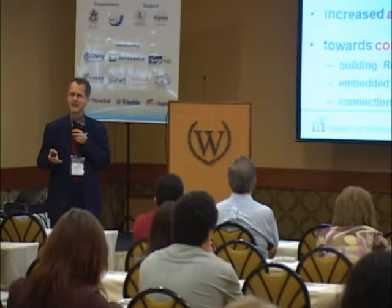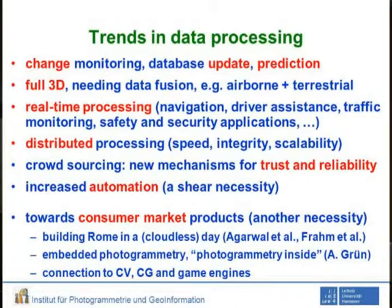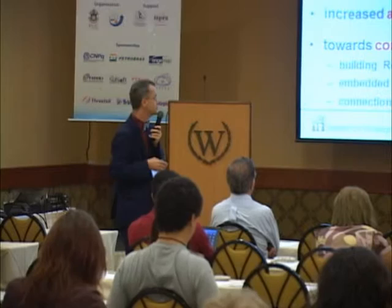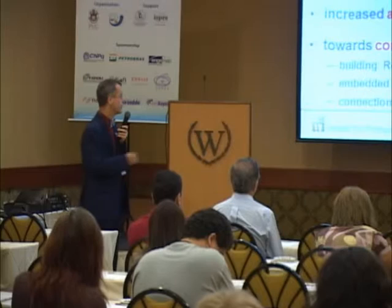Automation turns out to be a sheer necessity. With all these terabytes, petabytes, and whatever of pixels, there's just no way you can analyze images interactively. And there's another option: turning towards the consumer market. We are in the visual world — everything where there are images, you can do image processing and image analysis. There are of course many areas out there, other than the ones we usually work in, which make use of images.